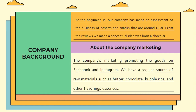At the beginning, our company made an assessment of the businesses of teas and snacks around Nilai. From the review we conducted, a conceptual idea was born which is Chocojak. Regarding the company's marketing, we promote our goods on Facebook and Instagram. We have a regular source of raw materials such as butter, chocolate, bubble rice, and other flavoring essence.